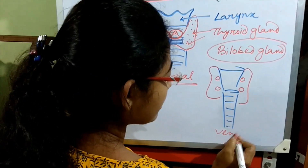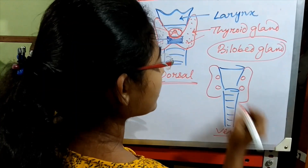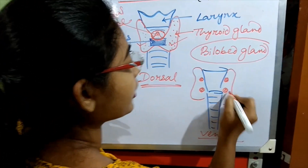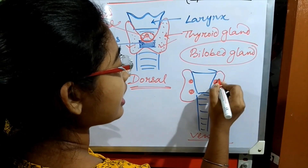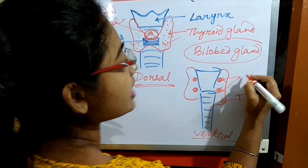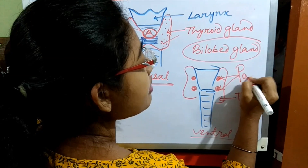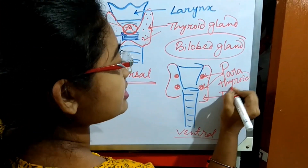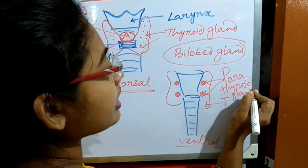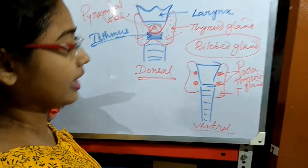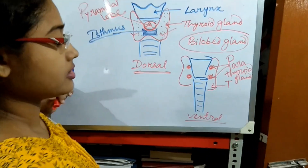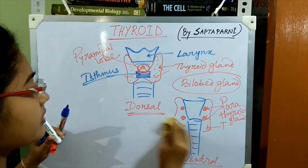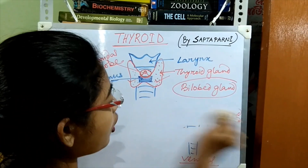You can find four small glands just behind the thyroid gland. This is the thyroid gland, and these four small glands are known as parathyroid glands. Now, coming to the hormones.